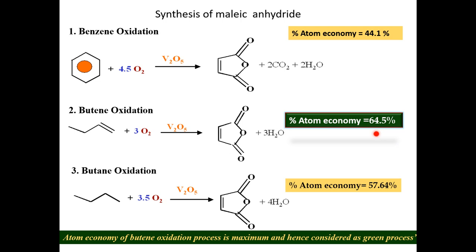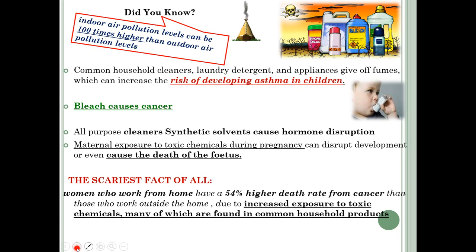We will solve numericals on atom economy in a separate lecture. The takeaway from this principle: try to convert 100% of the reactants into 100% of the product. Design your synthesis so that maximum reactants are converted into products.